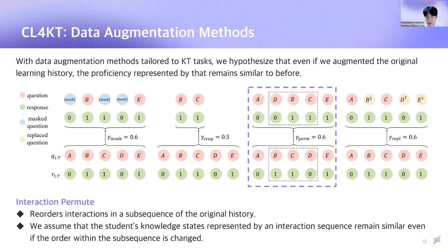The third one is interaction permute. This data augmentation reorders interaction in a subsequence of the original history. We assume that the student knowledge states represented by an interaction sequence remain similar even if the order within the subsequence is changed. For example, a student who has mastered a particular knowledge concept will be able to solve the problems relevant to the concept, regardless of the order of the problems.